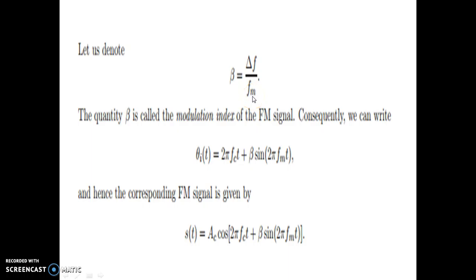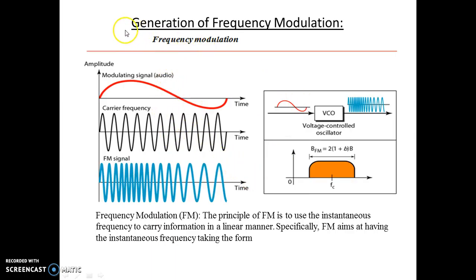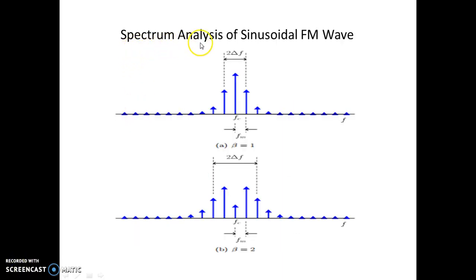FM can be produced by two different modulators: indirect FM, where frequency modulation is obtained via phase modulation; and direct FM, where the carrier frequency is directly changed by the modulating signal. In FM generation, an audio (analog) modulating signal changes the frequency of a VCO to produce an FM signal. The bandwidth is defined by Carson's rule: BW = 2(1 + β) × f_m.